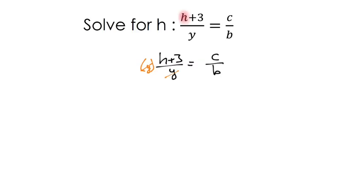Anything I do to one side, I got to do to the other. So over here, we have H plus three equals CY over B. Because this is really like a Y over one. So when you multiply straight across, you have this.